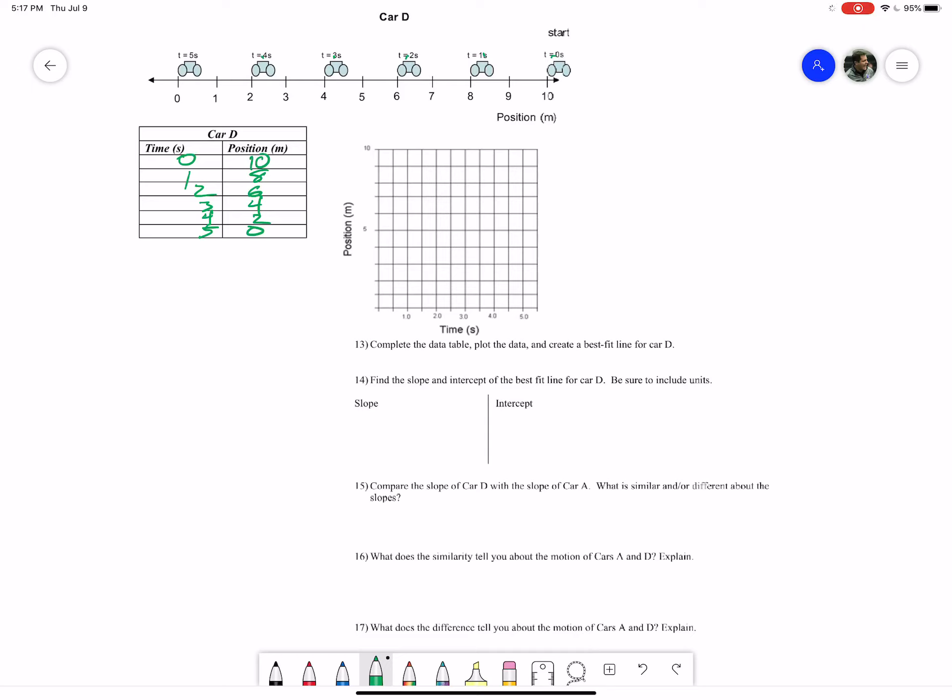Alright, so we finished the data table. Now let's plot it out and create a line of best fit. We are going to go with first at zero seconds. Here's my zero-zero right down there. At time of zero seconds, my position is all the way up here at 10.